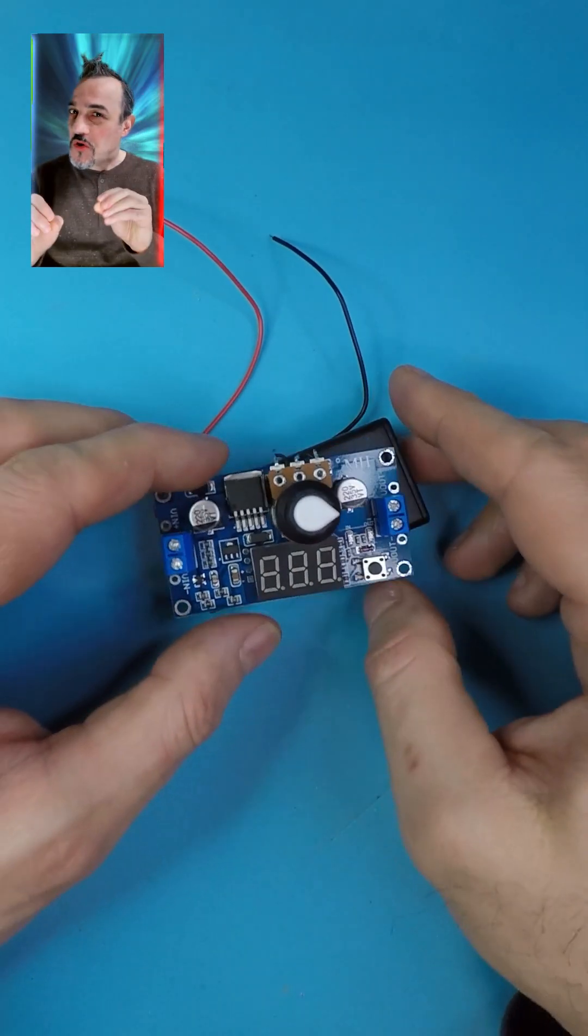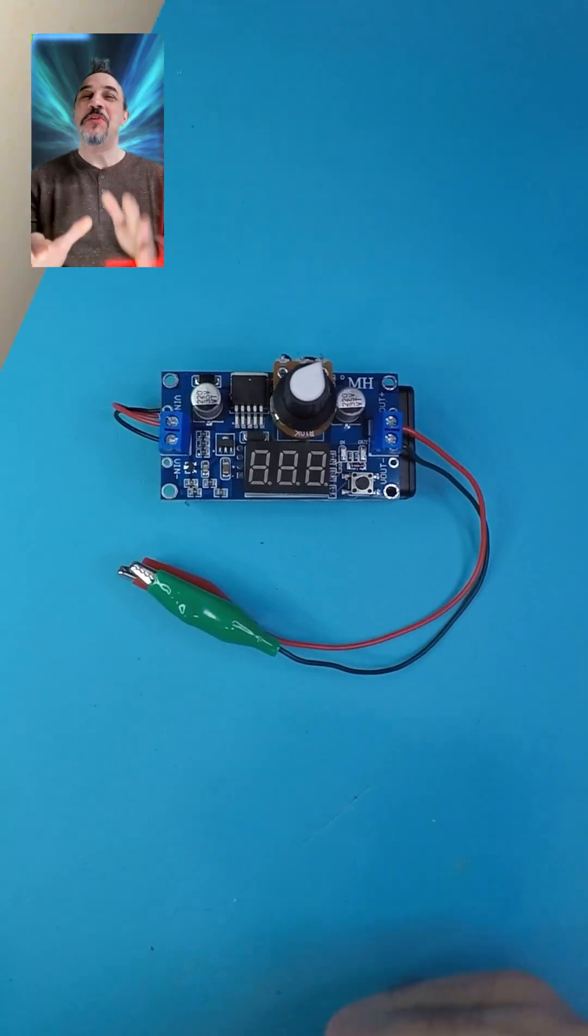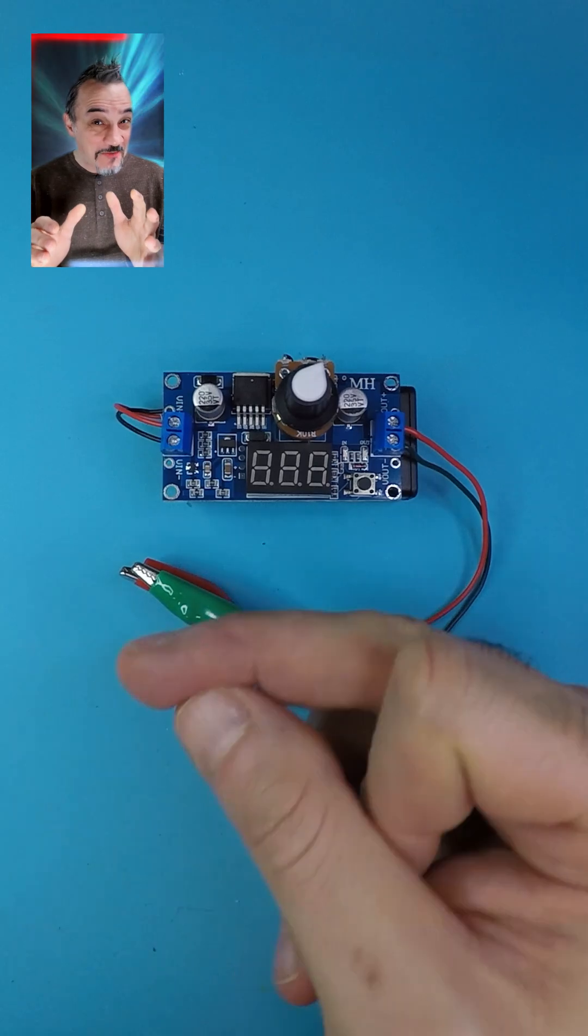In the end I have a pocket-sized adjustable DC power supply that can provide any voltage between 0 and 8.5 volts at its output.